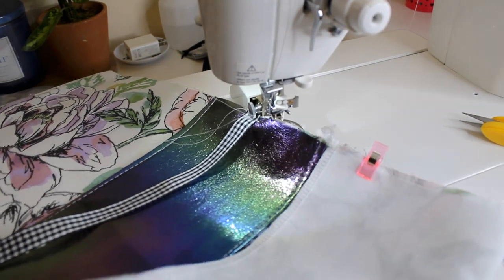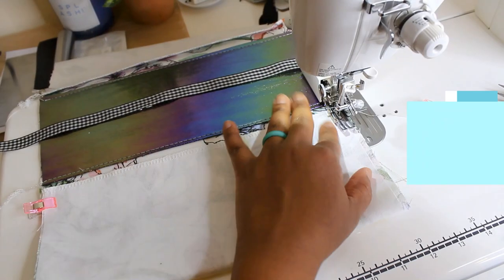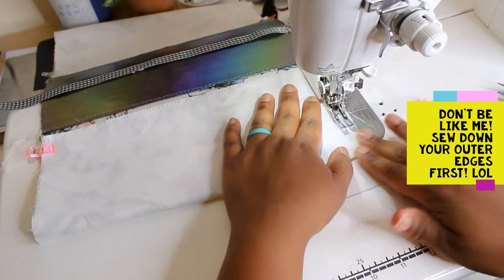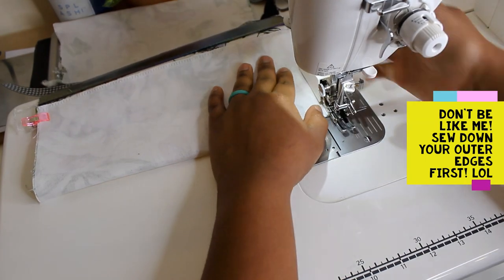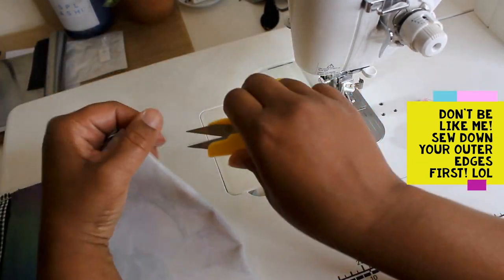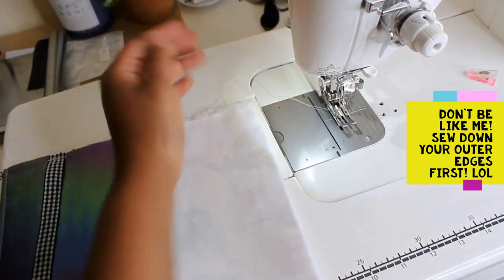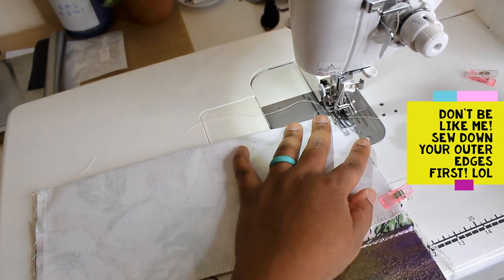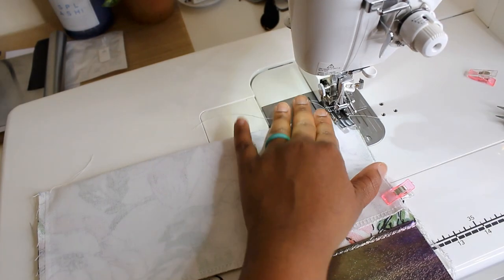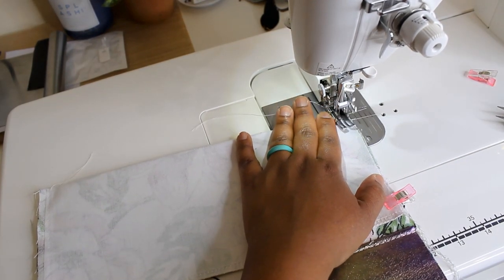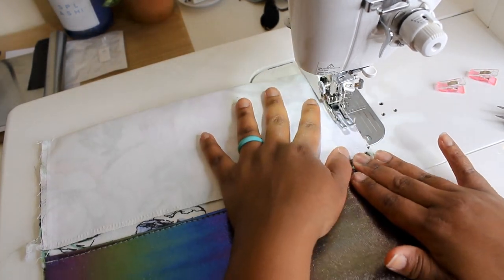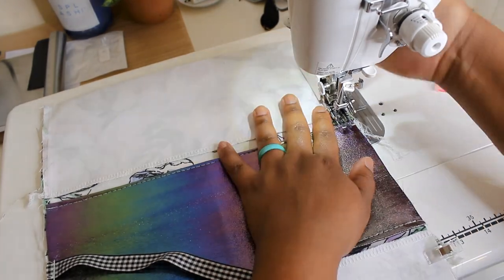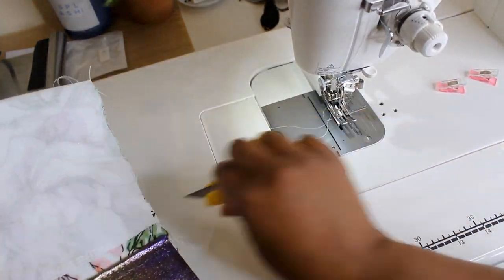Alright so now we are going to go ahead and turn our seams or our outer edge up towards the spine and we're going to go ahead and tack down on either end of it just so that it doesn't move. We are not going to go straight across it just yet but we're just going to go on either side of the spine and make sure that our outer flaps, I guess that's a better word for it, are sewn down.